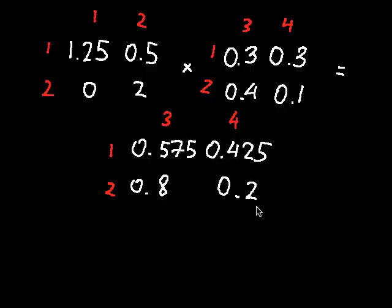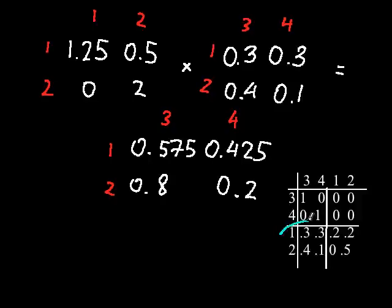Note that you must keep track of the row and column numbers as you multiply. So here, 1, 2 by 1, 2 multiplied by 1, 2 by 3, 4 yields 1, 2 by 3, 4 with this 1, 2 and this 1, 2 cancelling out. A trick to remember what these numbers will be is to look at the R matrix. The labeling on the R matrix here will always be the same as the labeling on the FR matrix.